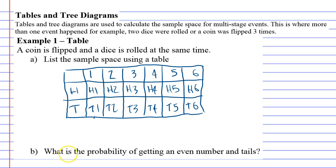Question B says, what is the probability of getting an even number and tails? So I'm going to grab a pen and list all the ones that have an even number and tails. So tails and the even number 2, tails and the even number 4, tails and the even number 6.